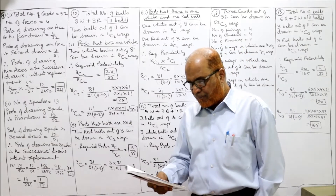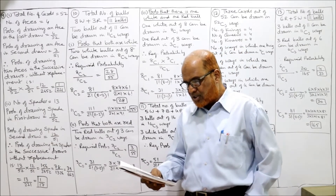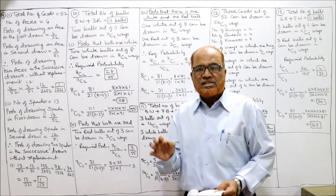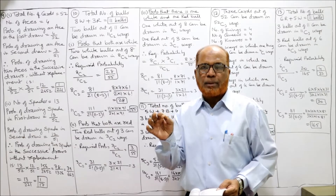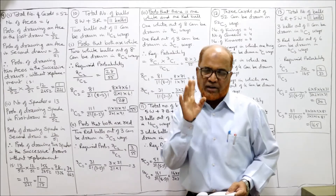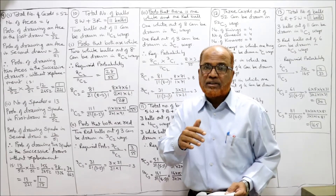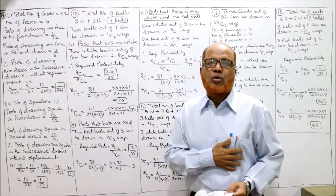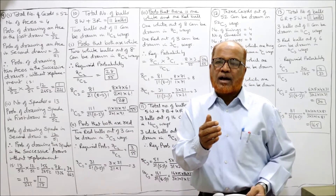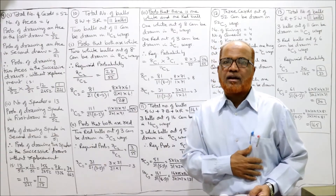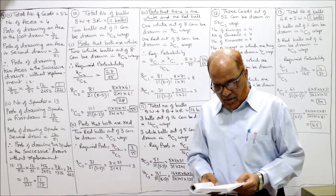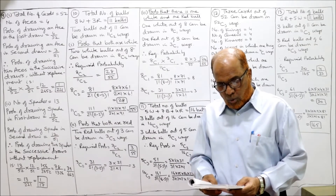Problem number nine: A card is drawn from a standard pack of playing cards, and then another card is drawn without first being replaced. A pack of cards contains 52 cards. One card is drawn, and after that another card is drawn without replacing the first draw. So now there are 51 cards remaining for the second draw.